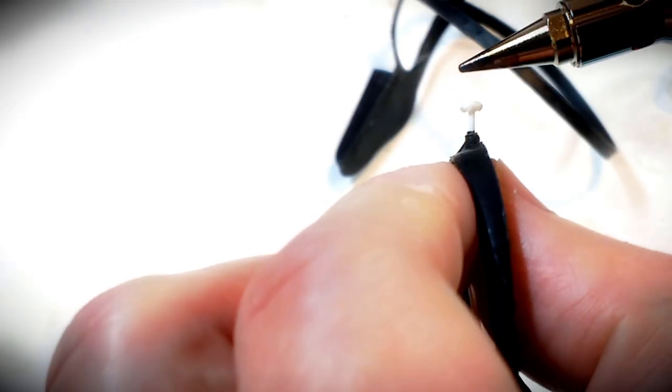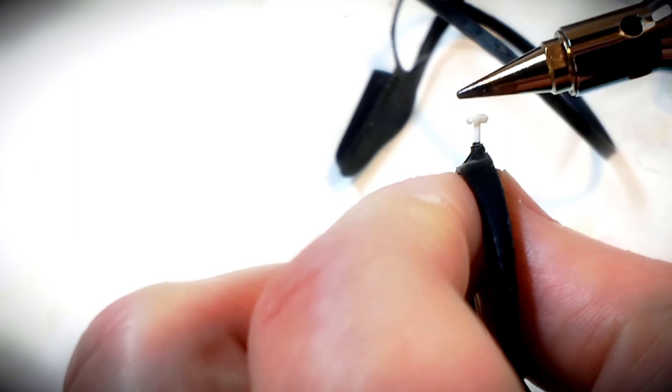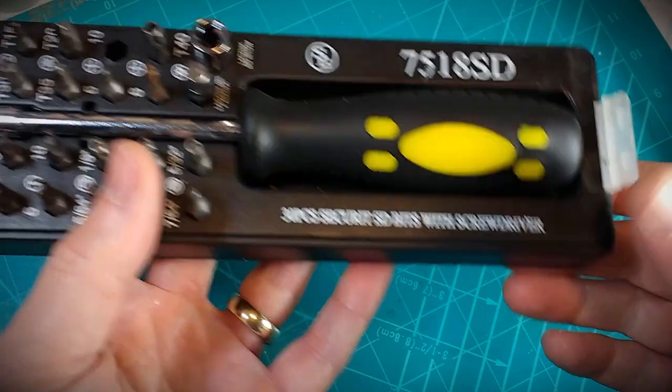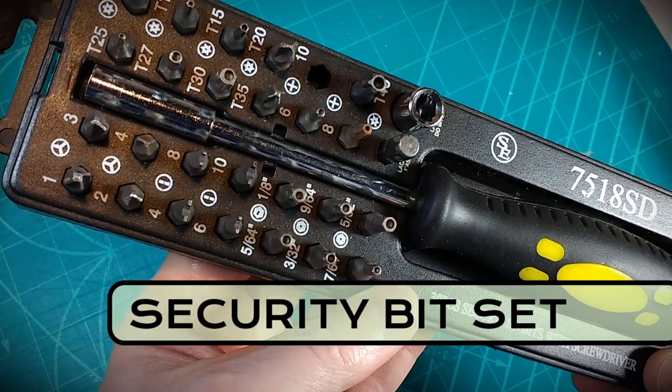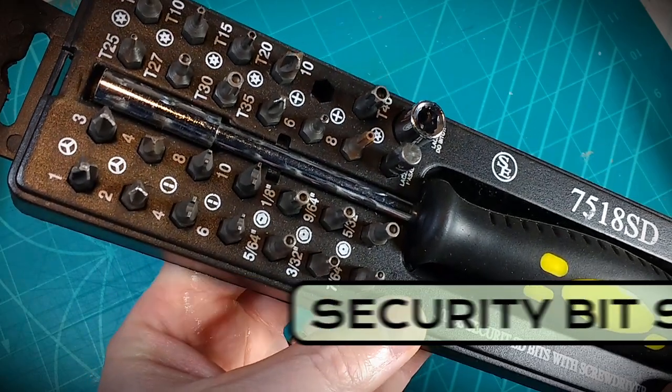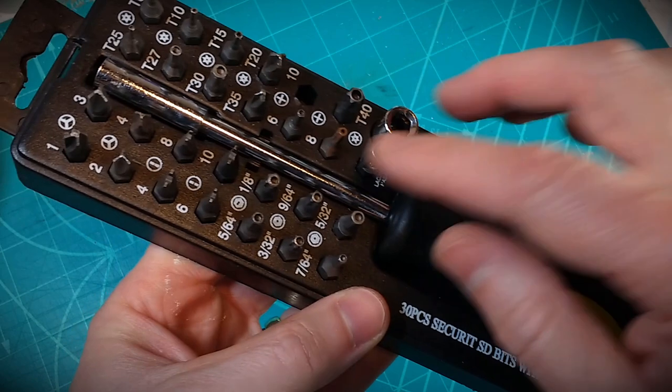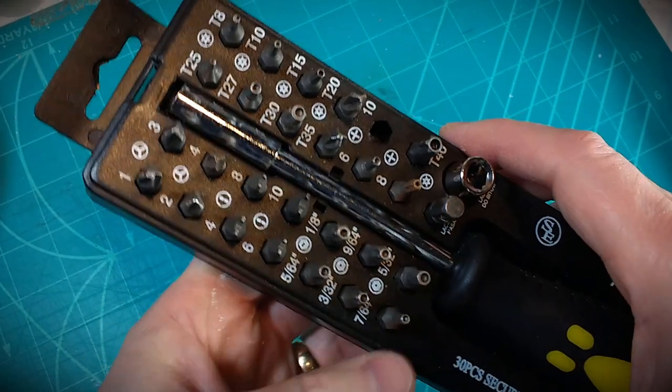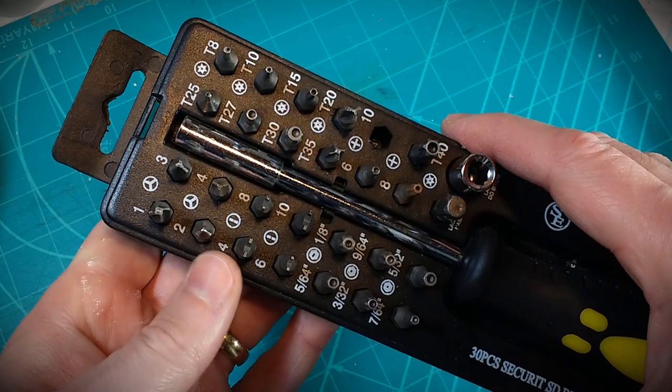This security bit set is handy because a lot of times some of the toys have specialty screw heads on there. So this kind of set will get you into just about any type of toy or device electronic. It's also handy around the house for other general repairs.